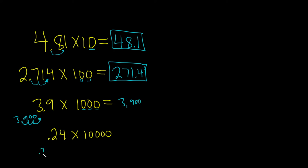Likewise here, the 0.24, let's see. We have one, two, three, four zeros. So you do one, two, three, four, and then you put zeros here. So that would be 2,400.